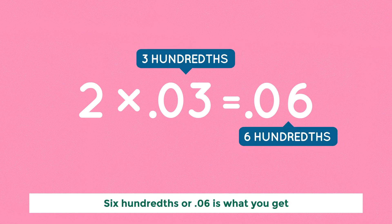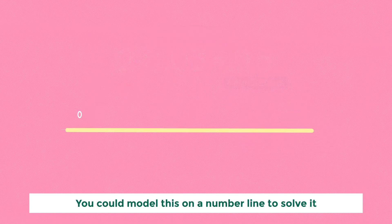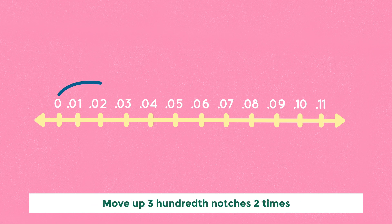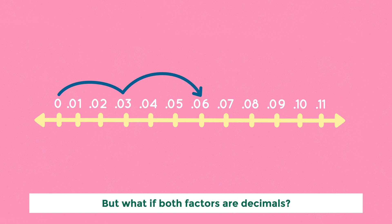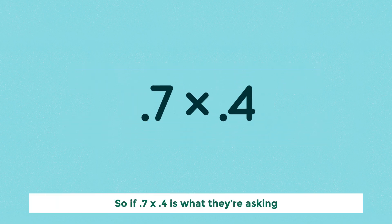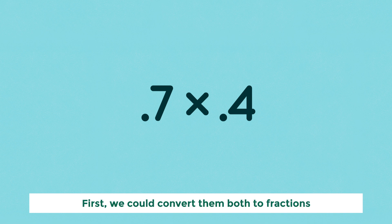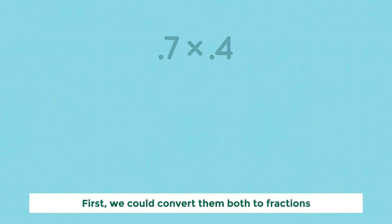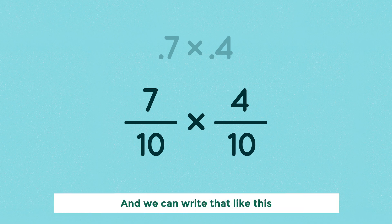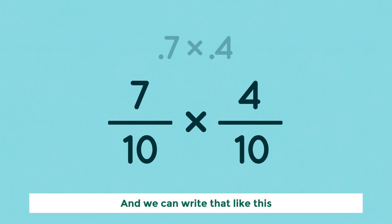Two times 0.03, or three hundredths — six hundredths, or 0.06, is what you get. You can model this on a number line to solve it. It looks kind of tricky, but let's give it a try. Move up three hundredths, two times. But what if both factors are decimals? Don't freak out, there's a way to solve that too. So if 0.7 times 0.4 is what they're asking, first we could convert them both to fractions — seven tenths times four tenths.